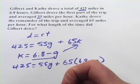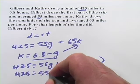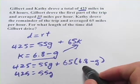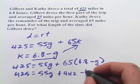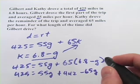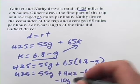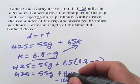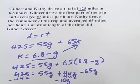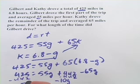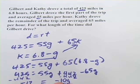And let's see. We'll do some math here. So 425, 55G, and then 65 times 6.8 is 442 minus 65G. And we will combine the like terms. We're going to get negative 10G over here. We can subtract 442 from both sides.